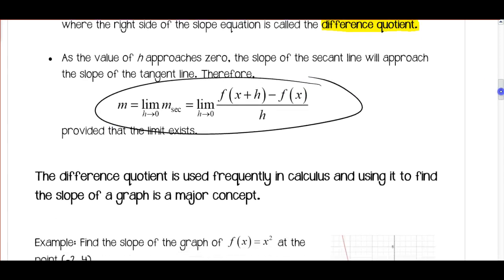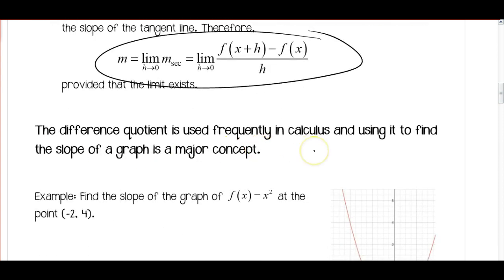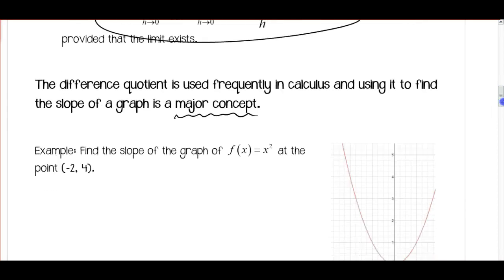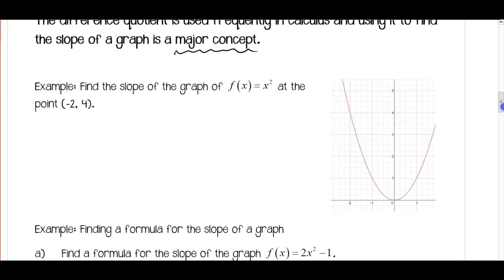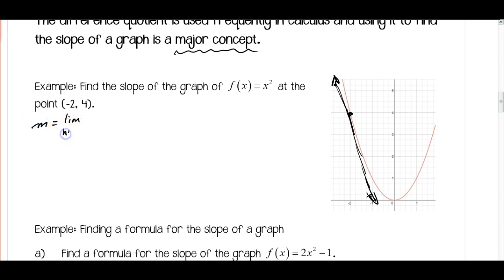If you have any questions after you watch the video, make sure you write them down and ask in class. The difference quotient is used frequently in calculus, and using it to find the slope of a graph is a major concept — this is something you need to be able to do. For our example, we want to find the slope of the graph of f(x) = x² at the point (-2, 4). Here's that point, and we can sketch in the tangent line. The slope is going to be the limit as h approaches 0 of f(x+h) minus f(x) divided by h.